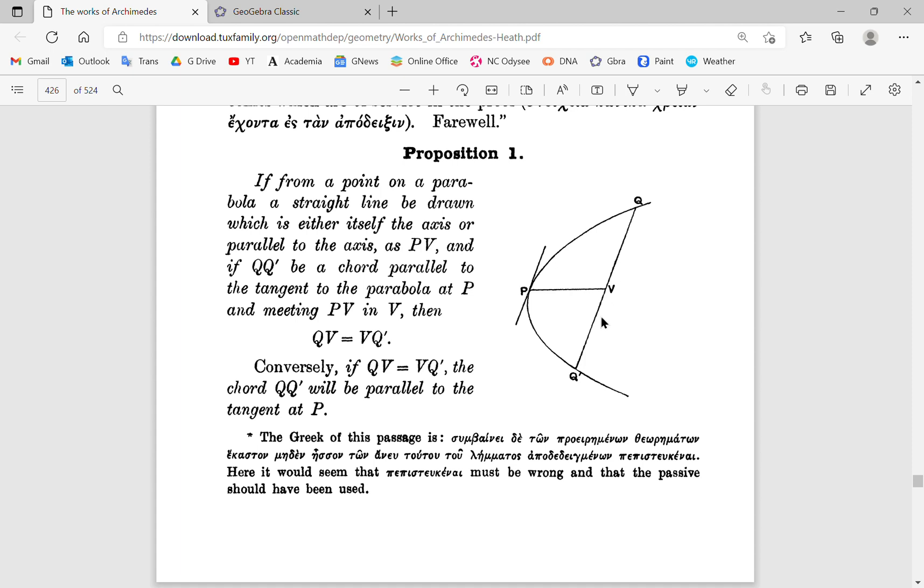And conversely, if these two sections here are equal, then of course this will be parallel to Q and Q'V. And it's very hard to see if you're looking at this. And I've never actually seen a geometric proof. So I'm going to show you now for the first time a geometric proof, which is very simple, which you've probably never seen before.